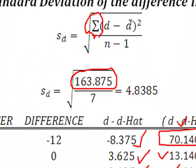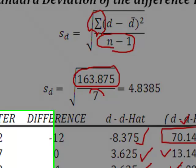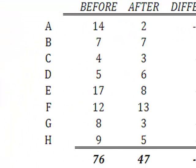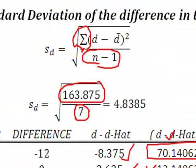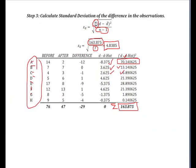I substituted it right there. The denominator, I had to have N minus 1, and I remember I had 8 observations, so that gave me 7. Remember, this is where I got the 8 observations. This was 1, 2, 3, 4, 5, 6, 7, 8. So I simply took 163.875 divided by 7, took the square root, and it gave me the standard deviation of the differences as 4.8385.